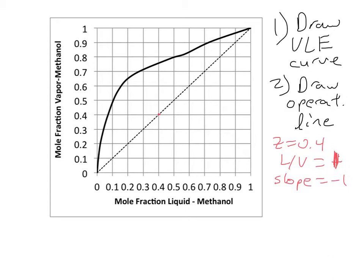That's Y equals X equals 0.4. And then I have to draw this line here. Let's see if I can draw this straight. Something like that. So that is my operating line for a feed value of 0.4. And the L over V ratio is 1, so giving me a slope of negative 1.